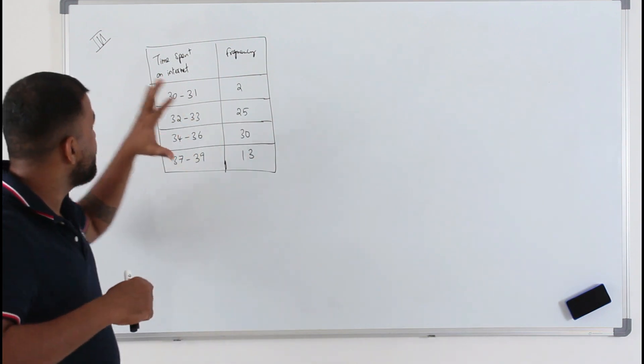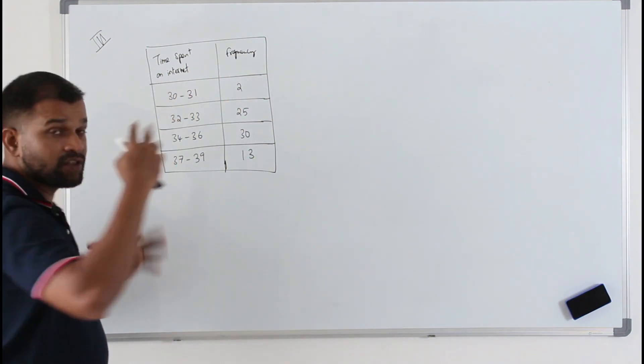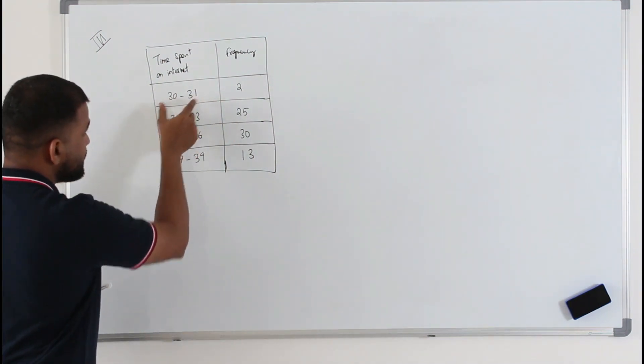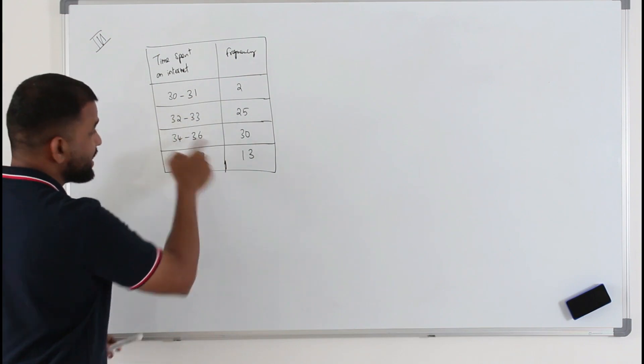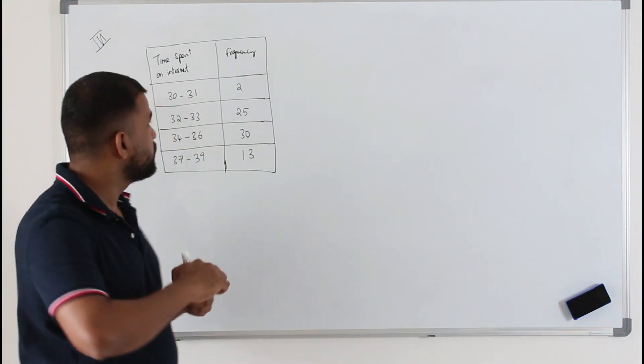Now here in third pi we have a grouped frequency table with gap. So that's the first thing you should notice when you have a class interval - always check whether it has a gap or not. It has a gap. So we are going to apply linear interpolation to find q1, q2, q3.